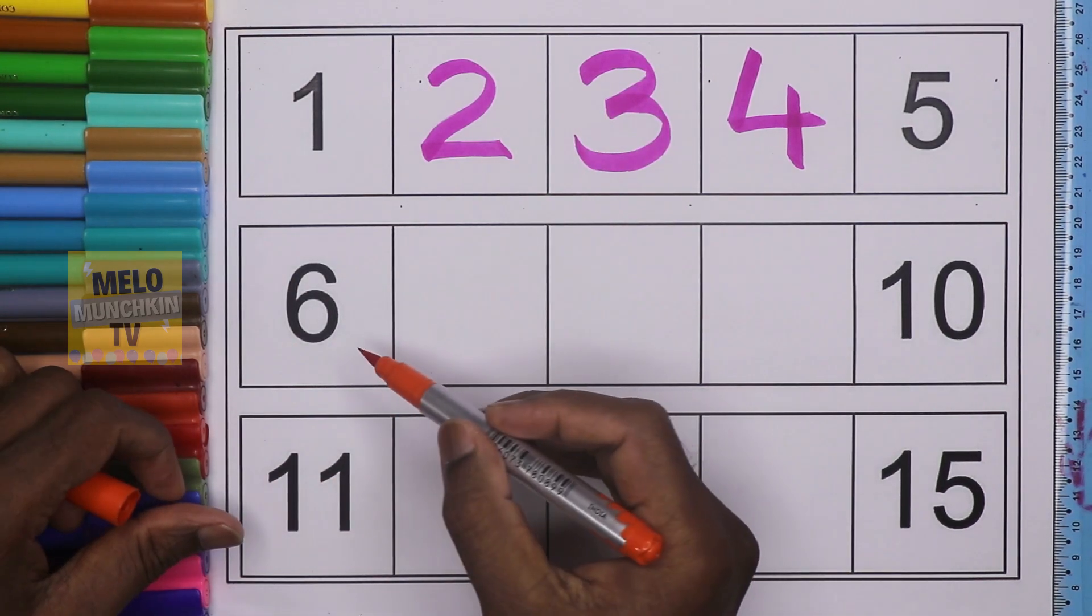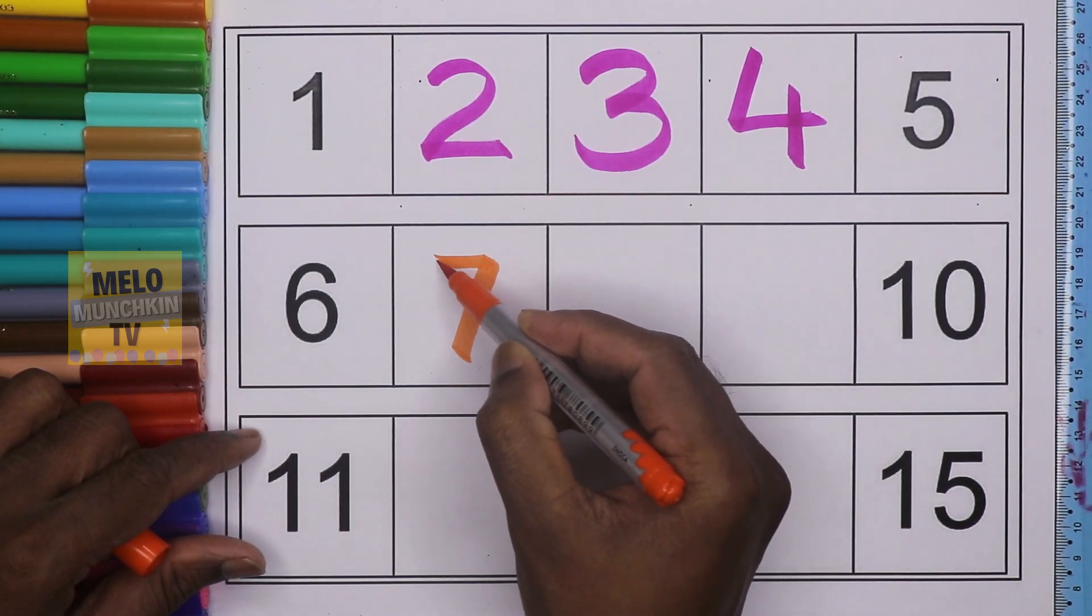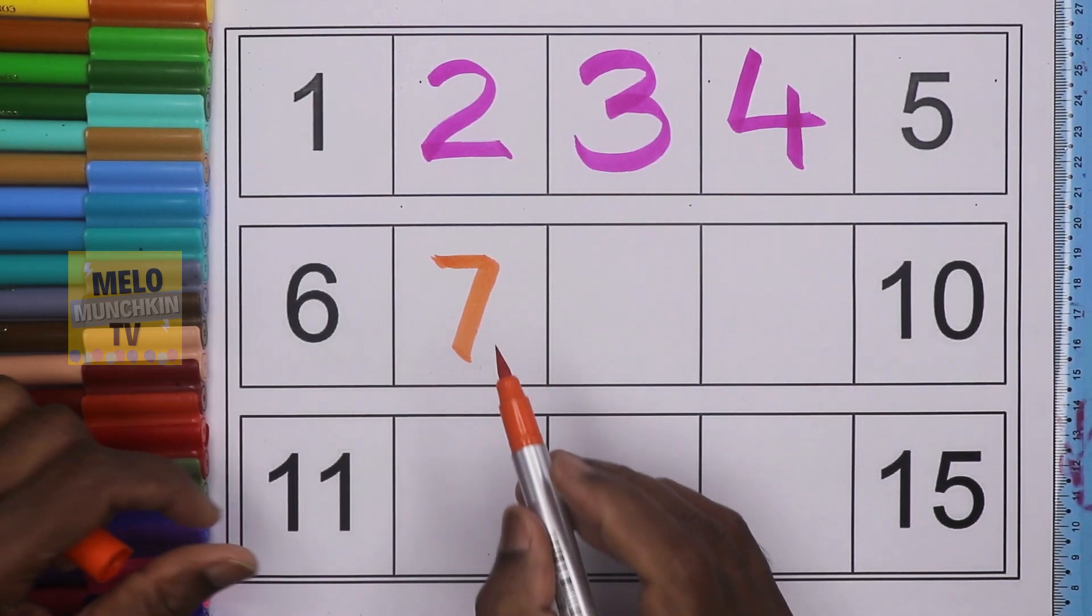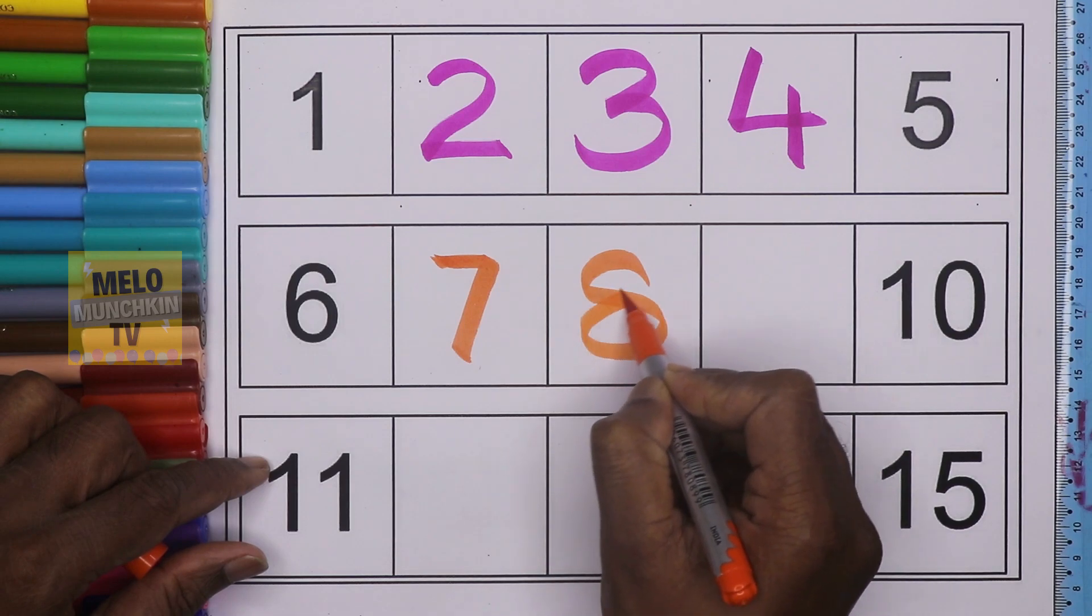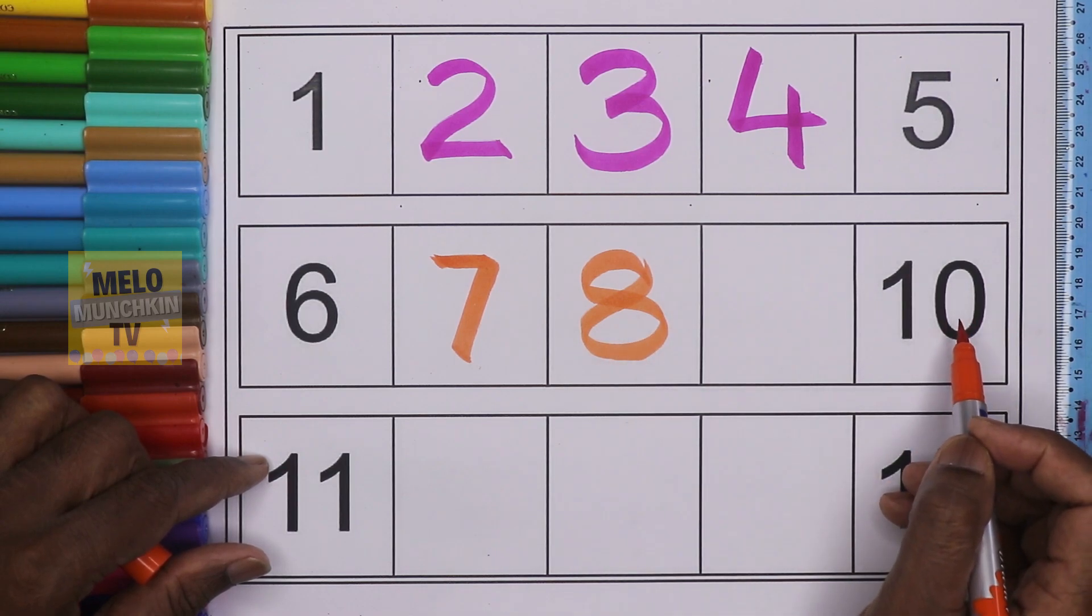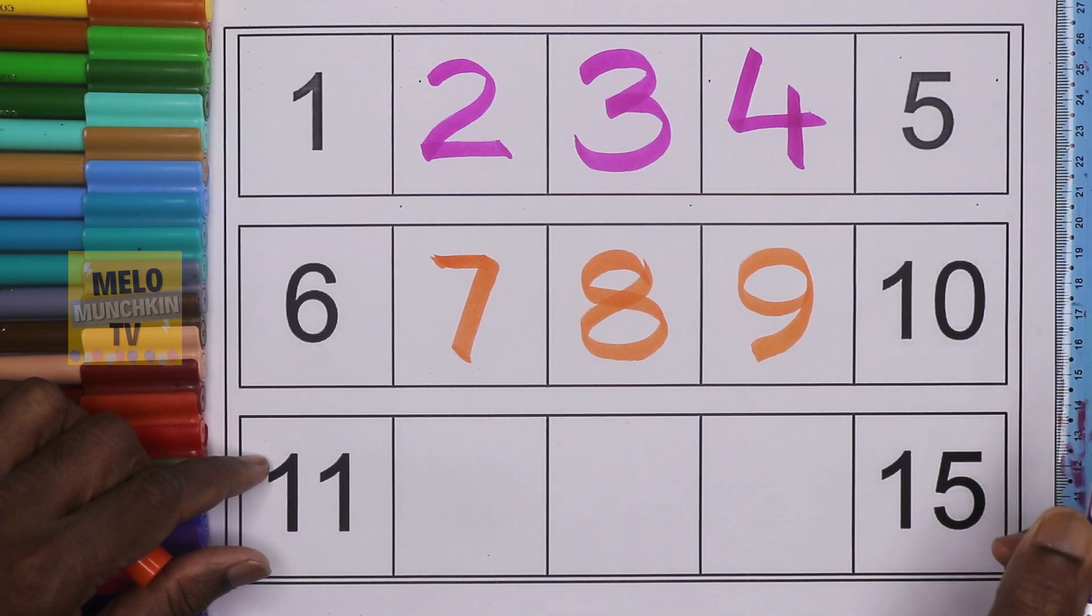What comes after 6? It's 7, S-E-V-E-N, seven. And what comes after 7? It is 8, E-I-G-H-T, eight. And what comes after 8 but before 10? It's 9.